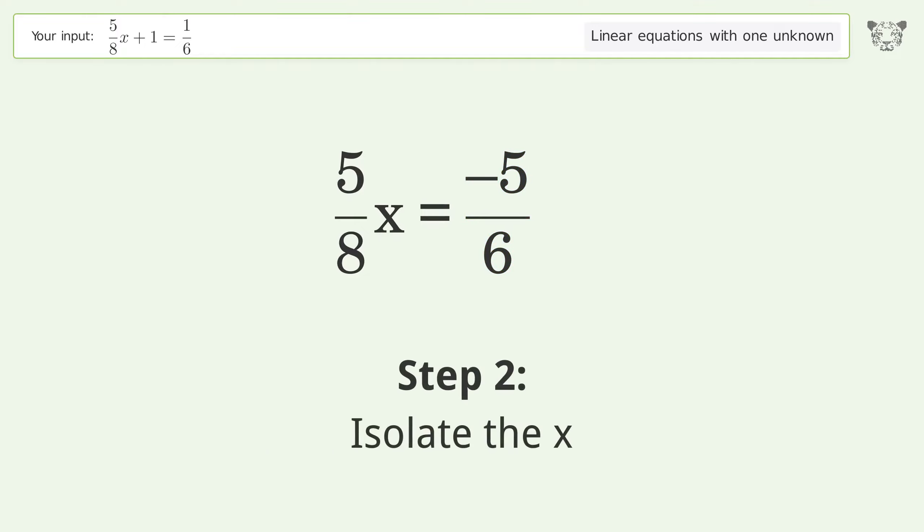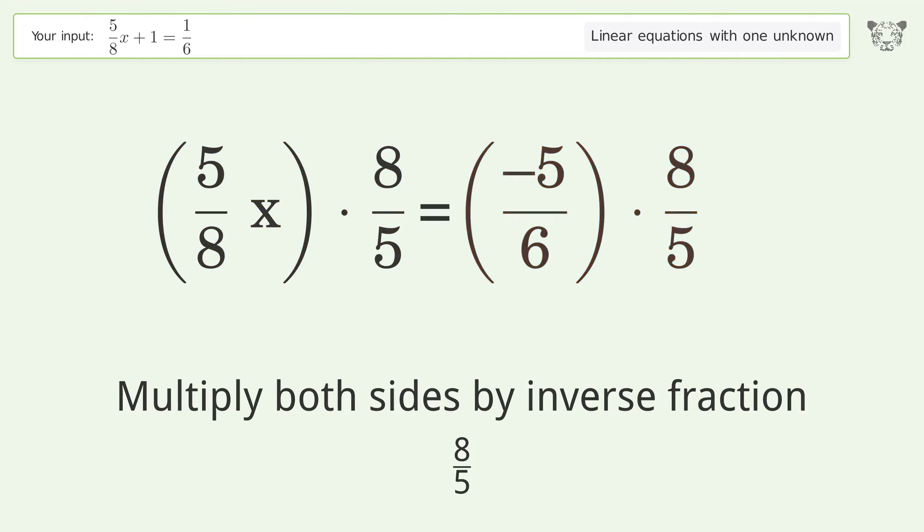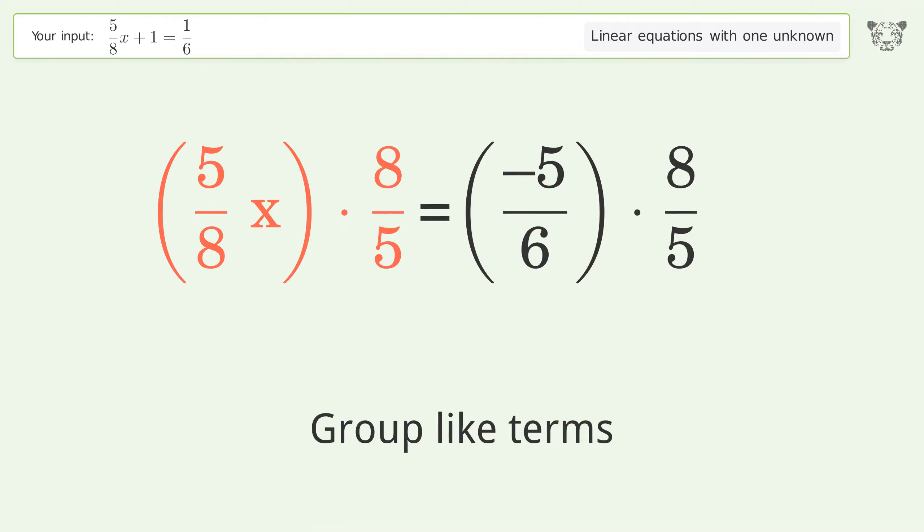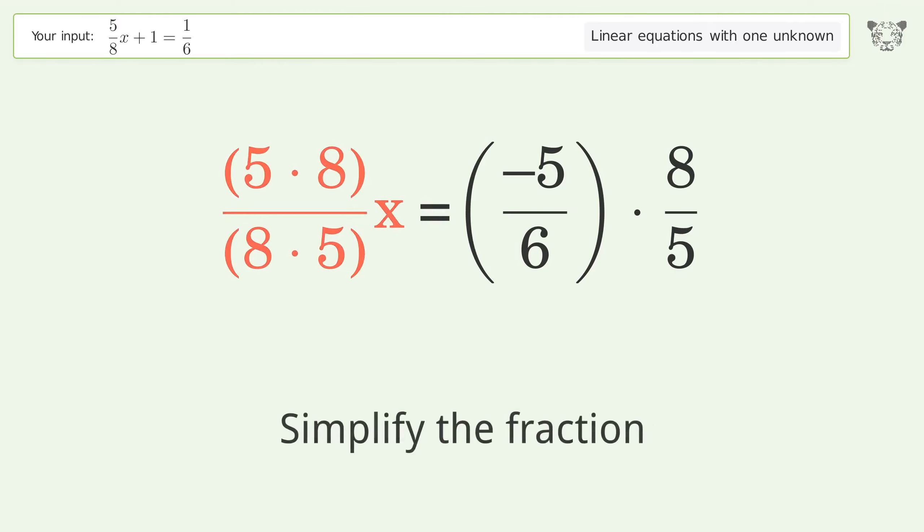Isolate the x. Multiply both sides by inverse fraction 8 over 5. Group like terms. Multiply the coefficients. Simplify the fraction.